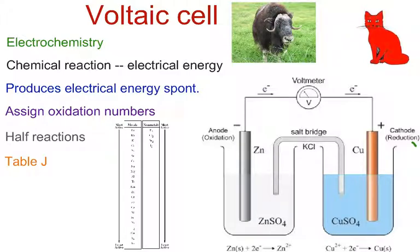Voltaic Cell comes under the topic of electrochemistry. In electrochemistry, we have a chemical reaction that can produce electrical energy, or we have electrical energy that is used to produce a chemical reaction. In this cell, the Voltaic Cell, electrical energy will be produced spontaneously. This is how a battery works. It's a chemical reaction, and electricity is produced from the flow of electrons.